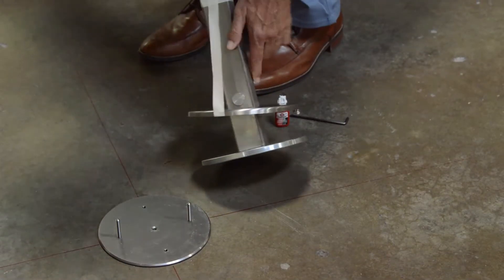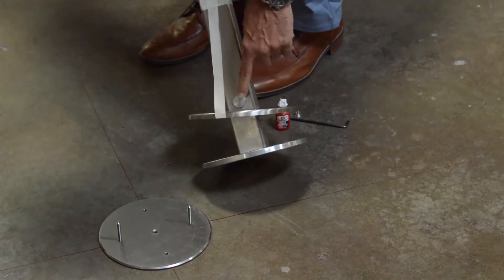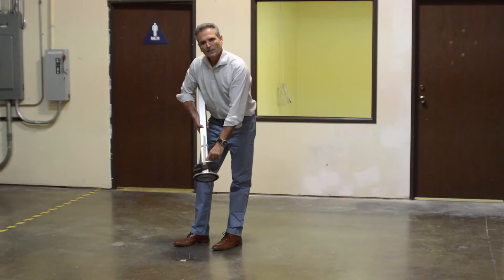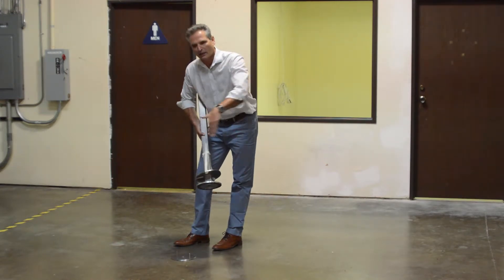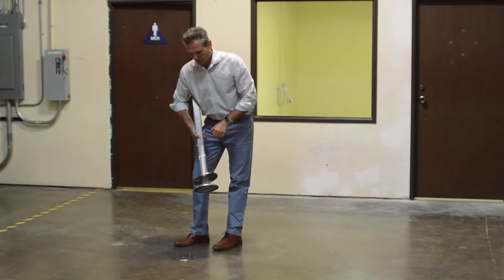Now if you'll notice, on the post, two of the surfaces have a stainless steel pin coming out of it. Just be sure that the pins are running parallel to the panel that you're going to be installing.